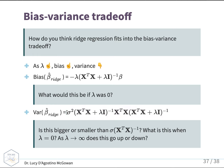As lambda goes to infinity, is the variance going to get bigger or smaller? It's going to get smaller, because as lambda goes to infinity, we're adding a really big number to X'X. When we take the inverse of that, it's sort of like dividing by a really big number, which is going to make the overall equation smaller.